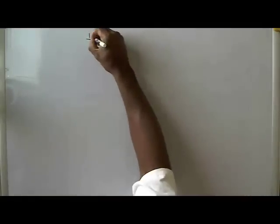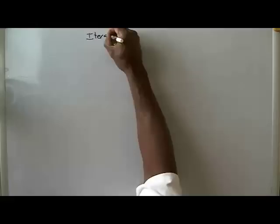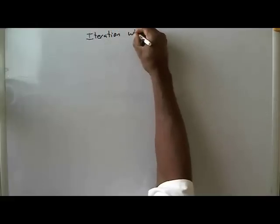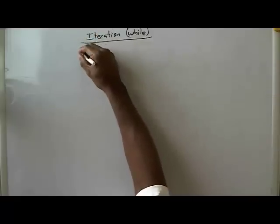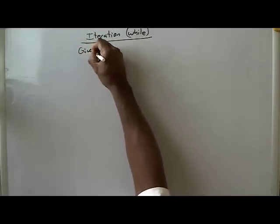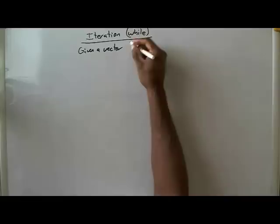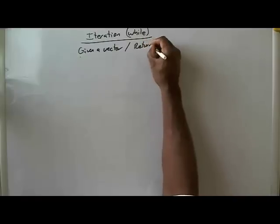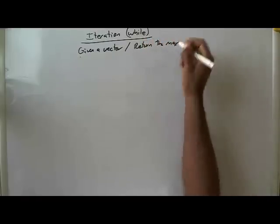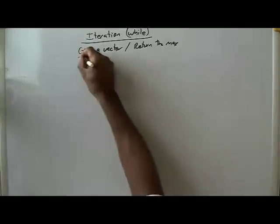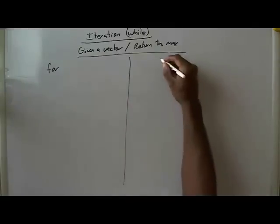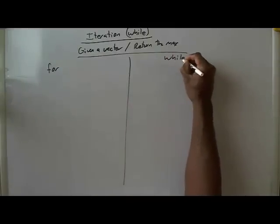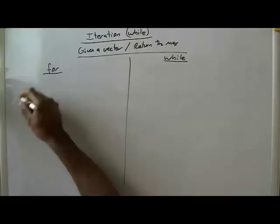This is the fourth of four examples of iteration using the while loop. In this particular problem we are given a vector and we must return the maximum value in that vector. We have done this problem before using the for loop, which I will re-illustrate and then compare and contrast to the while loop.